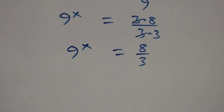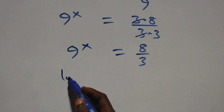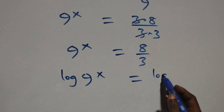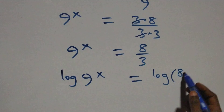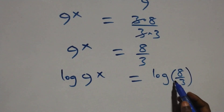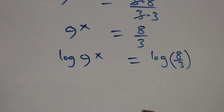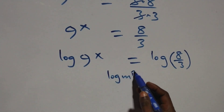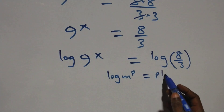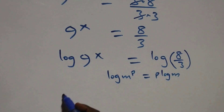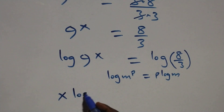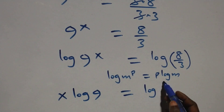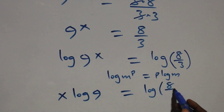We take the log on both sides: log of nine raised to the power x equals log of eight over three. We apply the power rule of log — when we have log m raised to the power p, it's the same as p times log m. So this becomes x times log nine equals log of eight over three.